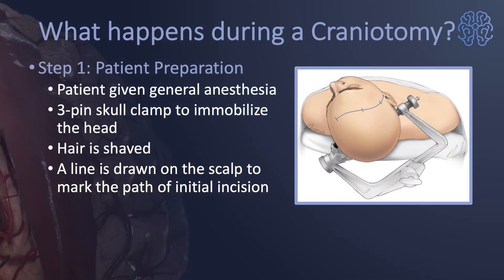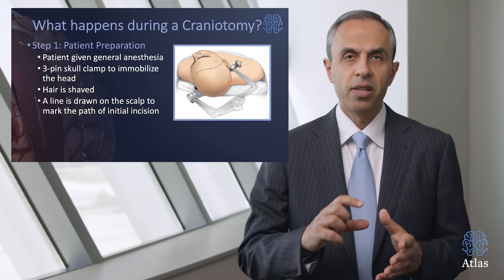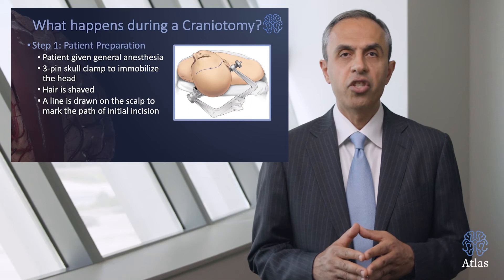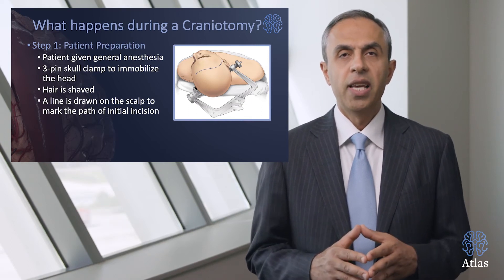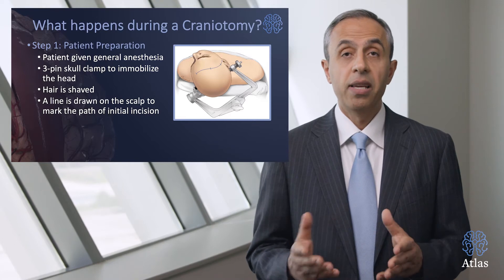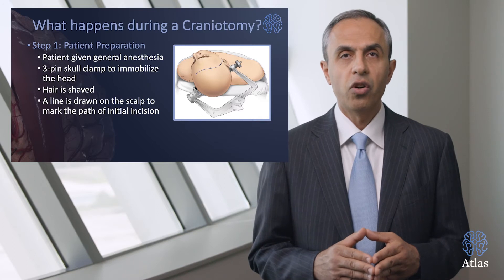Let's talk about the steps of the craniotomy. Number one is patient preparation. As you can see on the image, the patient is given general anesthesia, the head is fixated and immobilized in a three-pin skull clamp, and the hair is shaved, typically in a very selective manner around the incision. A curvilinear or straight line is marked over the scalp, behind the hairline for cosmetic purposes, to be able to reach the skull.